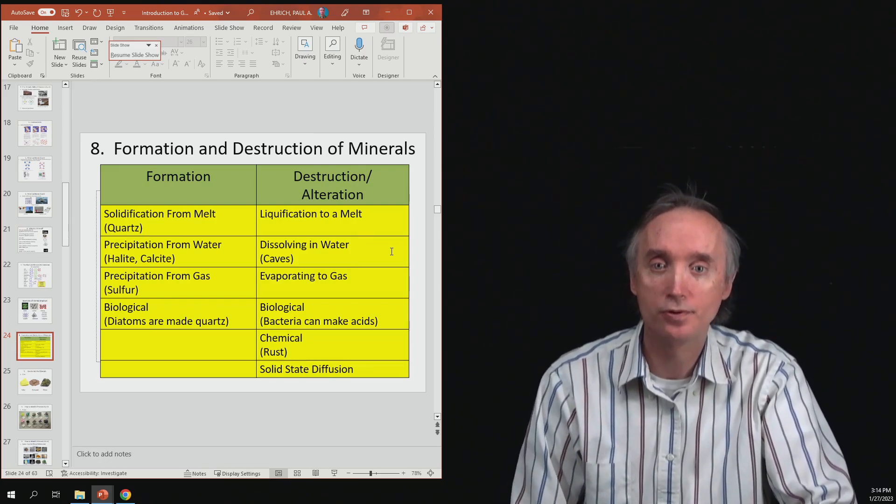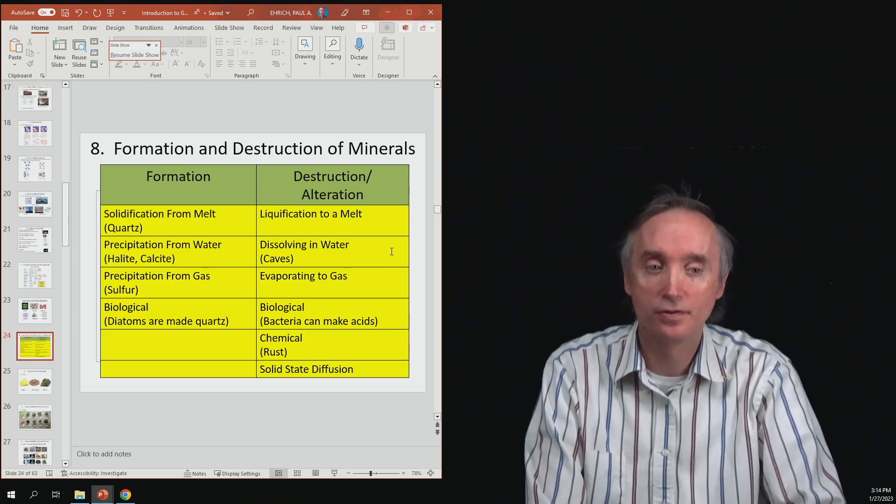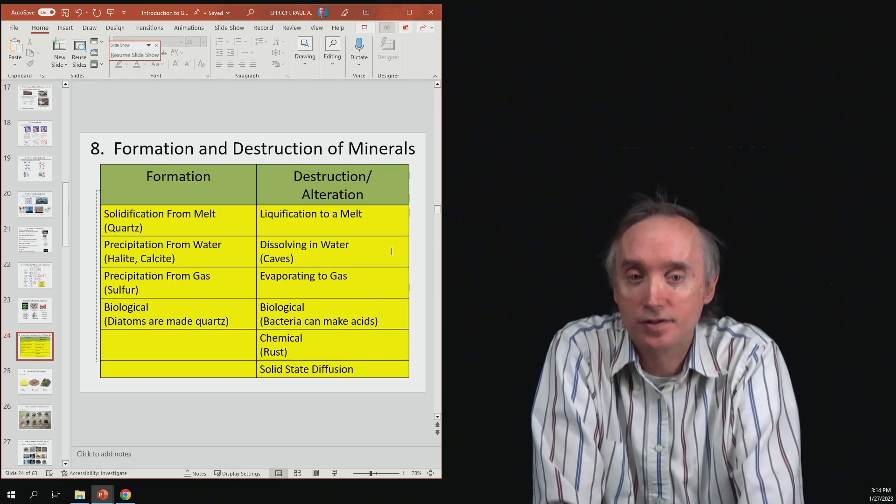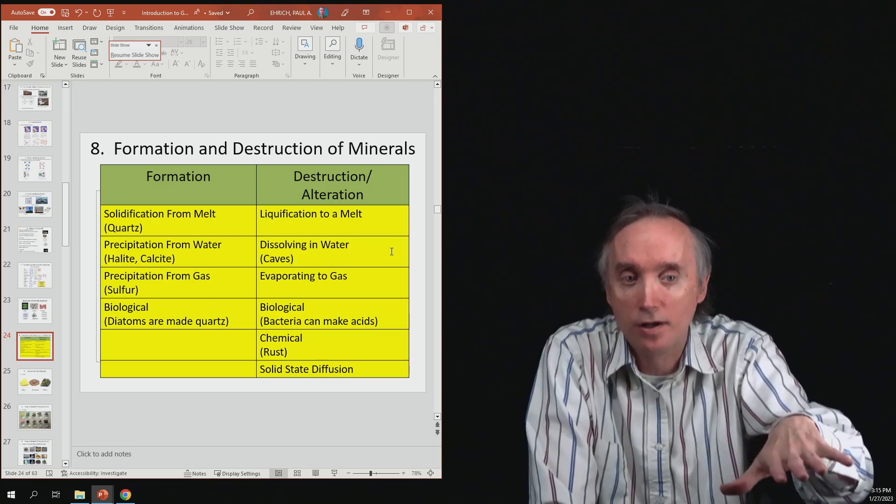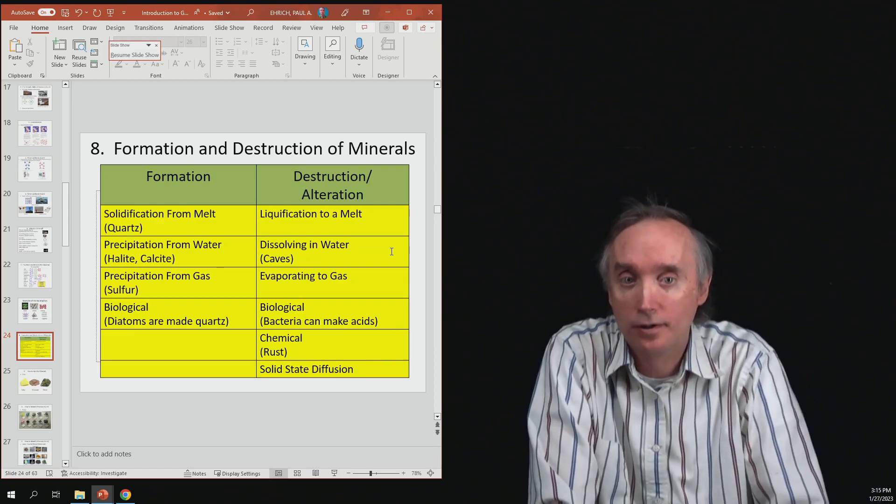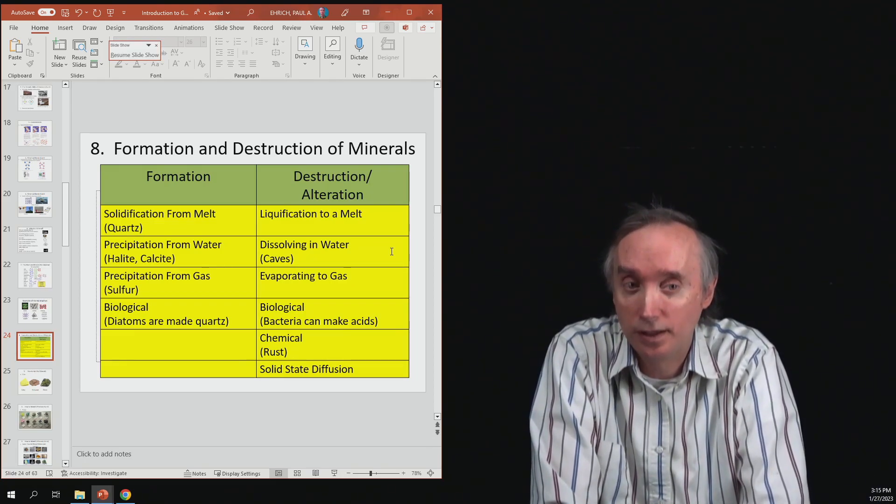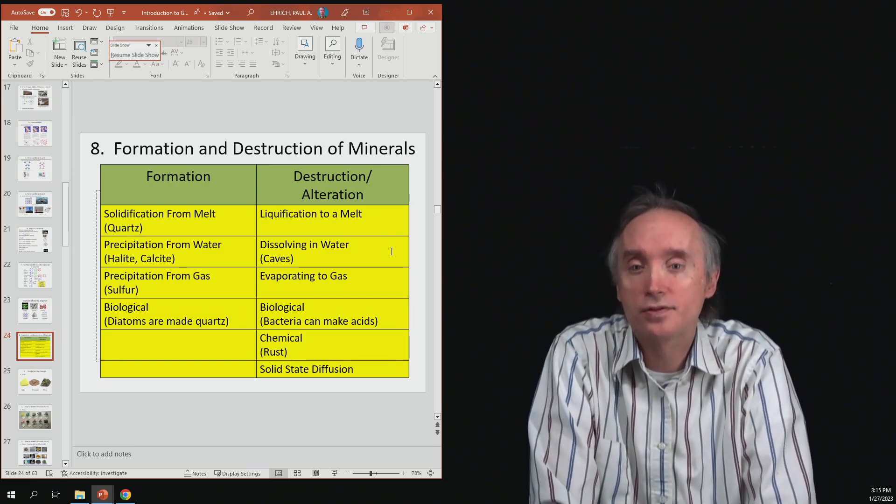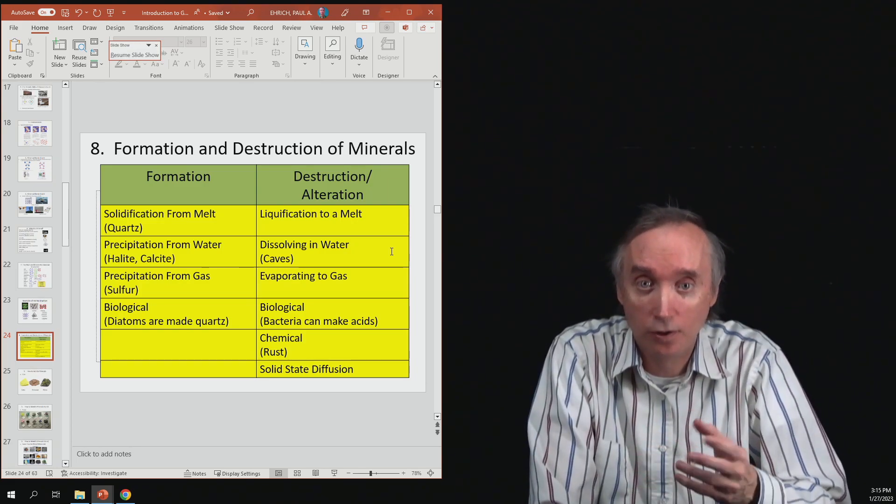Okay, the next one is precipitation from a gas. And so this happens around volcanoes, where sulfur, for example, as it cools off, will glom onto the existing rocks and cover it in this yellowish powder. So, do you think we could get rid of it? Yeah. So, if we were to heat up those rocks, then what could happen is that sulfur could evaporate.